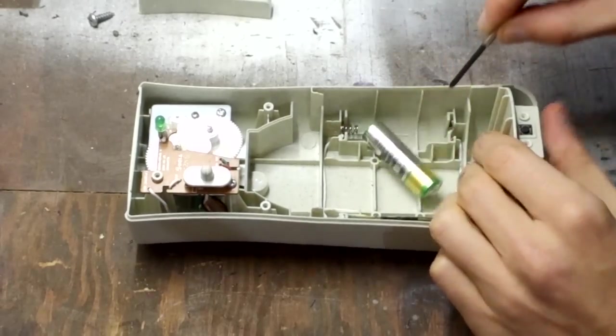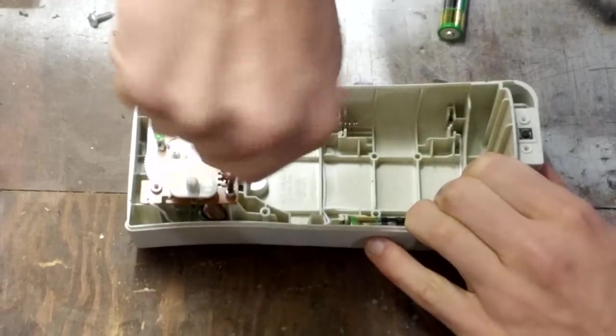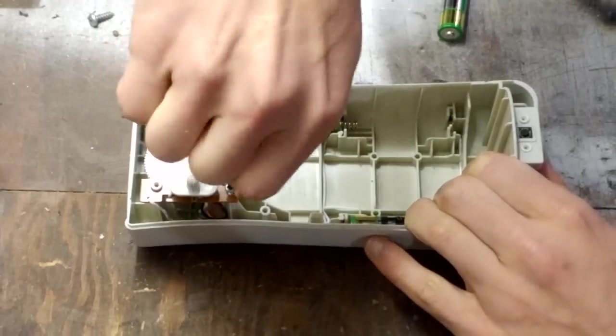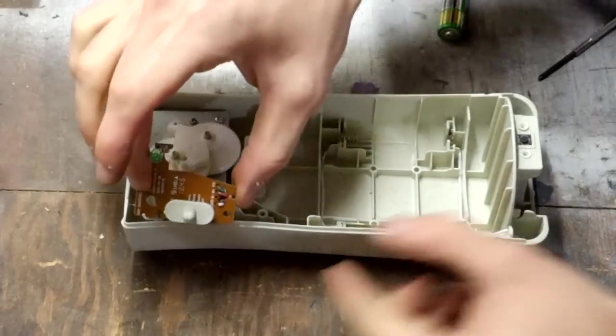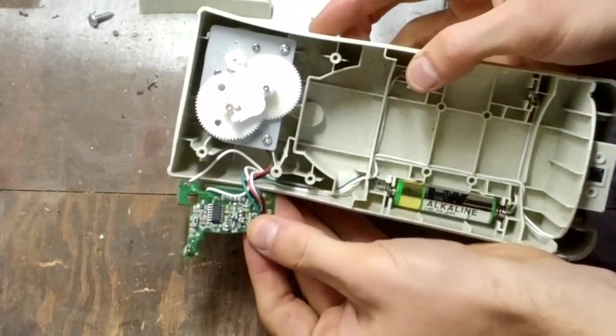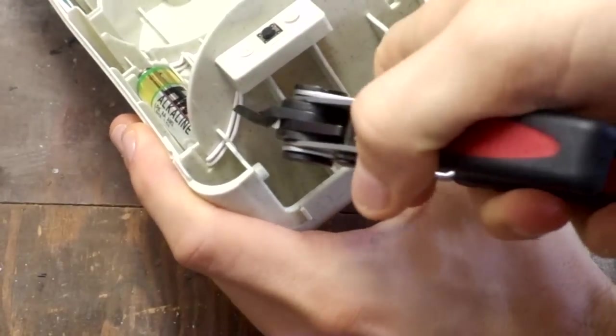Let's pop out the batteries, and then take off the circuit board. Now let's cut the button wires. We want to leave them long.